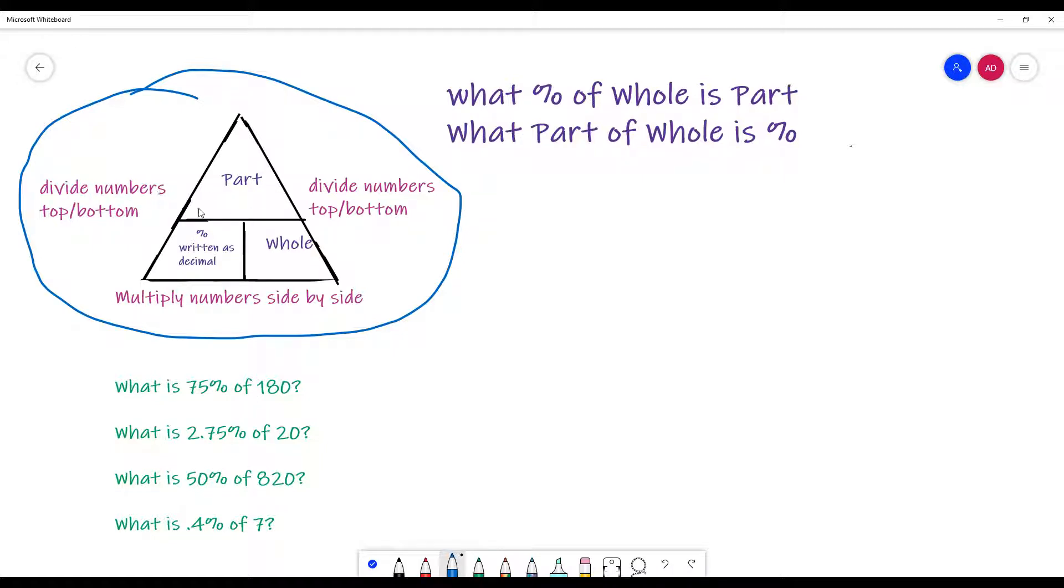Okay, so how does this thing work? Basically, the number that represents the part goes in this top triangle. The number that represents a whole goes in the bottom right, and the number that is the percent will always go down here in the bottom left. You will have two of these three. So you're going to basically be filling in either two of these, maybe part and whole, or part and percent, or maybe percent and whole.